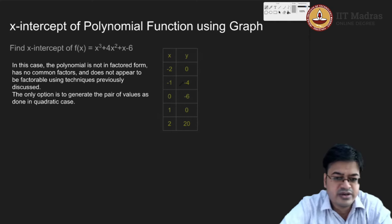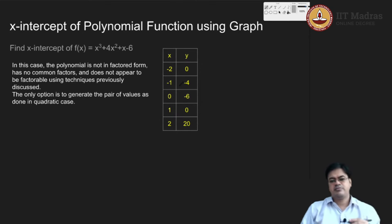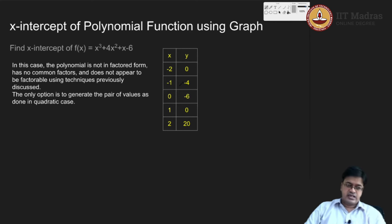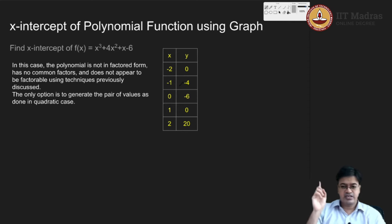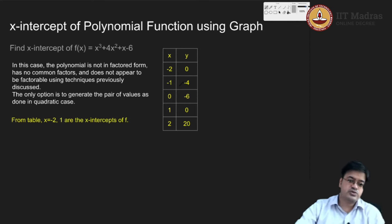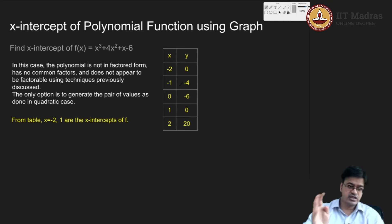Simply find what the function values are at some points. These are some standard points — I have drawn them symmetrically: 0, 1, 2, minus 1, and minus 2. When I considered these points, because the function is very nice, I accidentally came across two zeros: minus 2 and 1. So minus 2 and 1 are the x-intercepts of f, which is clear from the table.